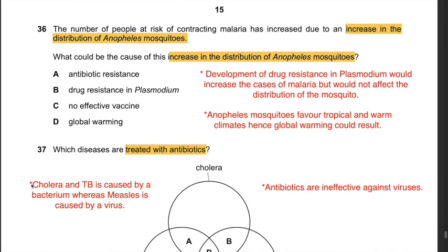Question 36: The number of people at risk of malaria has increased due to increased distribution of Anopheles mosquitoes. What could cause this? Antibiotic resistance - irrelevant. Drug resistance in Plasmodium would increase malaria cases but not affect mosquito distribution. No effective vaccine - unrelated to mosquito distribution. Global warming is the answer, as Anopheles mosquitoes favor tropical and warm climates, and global warming expands those habitats. Therefore the answer is D: global warming.